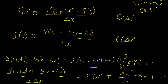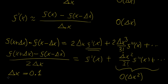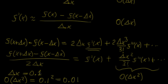After dividing by 2 delta x, the leading term in the truncation error becomes delta x squared over 3 factorial times f triple prime of x. This means the truncation error is now of order delta x squared rather than delta x. If delta x equals 0.1, the error is now 0.01 — much smaller — so the central difference is significantly more accurate than the forward or backward difference schemes.